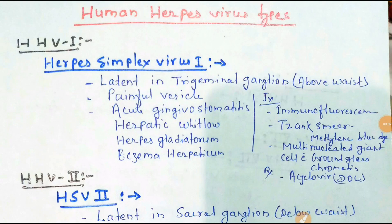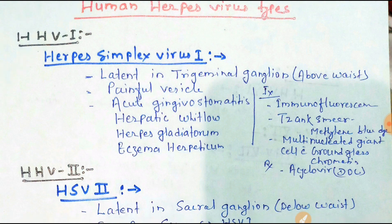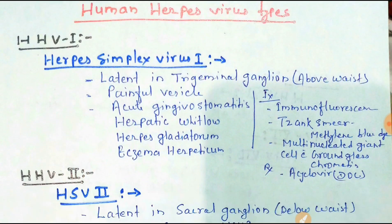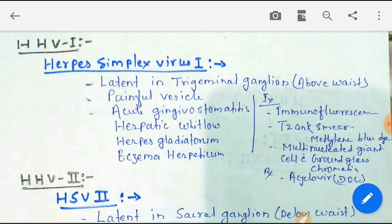Hi doctors and friends, I am Dr. Santosh Jha. Today's topic is the most common and most valuable topic in NEET PG, SPG, FMG, and other all PG exams. You should make a note of the Human Herpes Virus types, as one question is always asked in NEET PG and previous year papers. All points are very useful, and this is really a hot topic, so let us start.